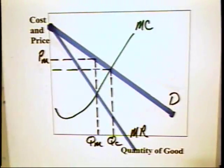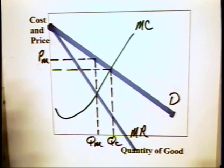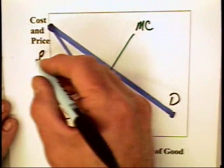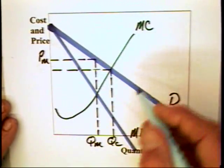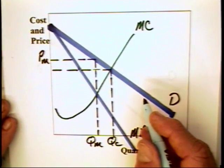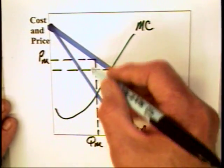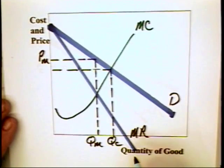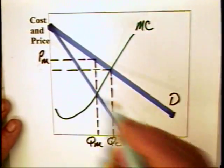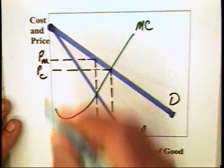The inefficiency can, in fact, be described in a graph that looks like this. That is, the monopoly will charge a price of PM. All I've done is taken out the average total cost curve. We'll charge a price of PM to sell quantity QM.